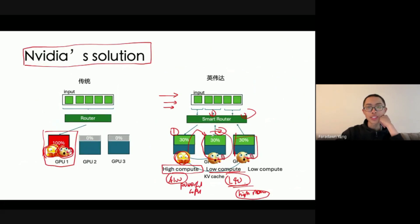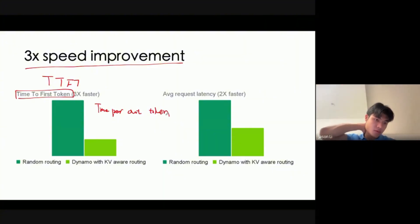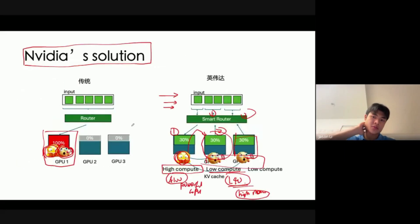What is the result of this aggregation of prefill and decode? It resulted in a three times speed improvement, time to the first token. Can I ask a question? Yes, please. You just mentioned that the previous process only works in the decoding process when you use three GPUs rather than one in your example. But when you say time to the first token, isn't that only reliant on the prefill process? But why is that improved as well? Exactly, that's a very good question.